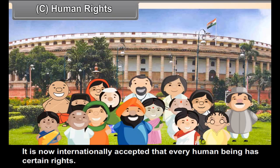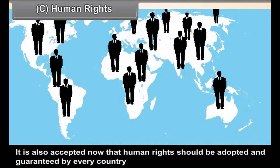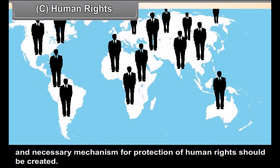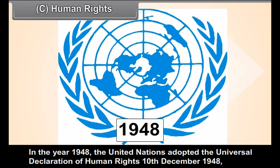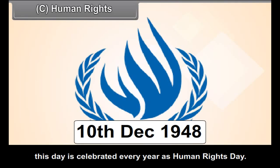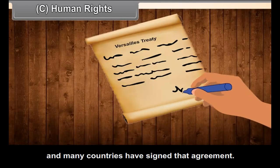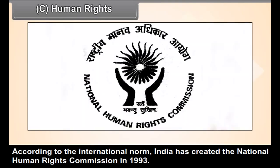Human Rights. It is now internationally accepted that every human being has certain rights, described as human rights. It is also accepted that human rights should be adopted and guaranteed by every country, and a necessary mechanism for their protection should be created. In the year 1948, the United Nations adopted the Universal Declaration of Human Rights. This day is celebrated every year as Human Rights Day. Later, in 1966, the General Assembly of the United Nations adopted the International Covenant of Economic, Social and Cultural Rights, and many countries have signed that agreement. According to the International Covenant, India created the National Human Rights Commission in 1993.